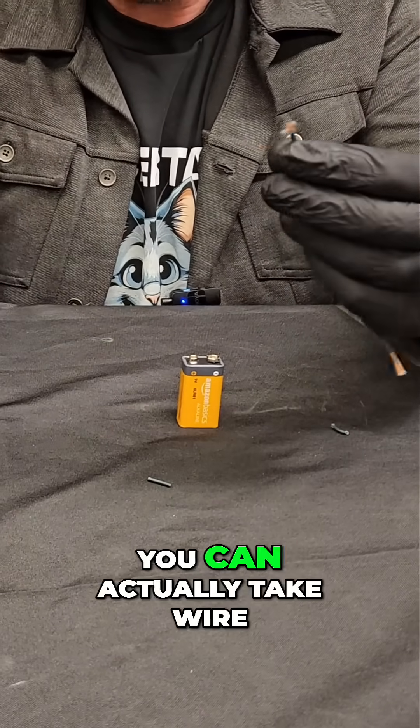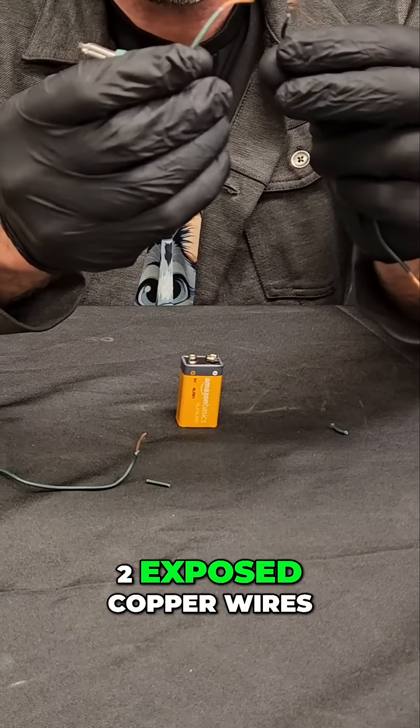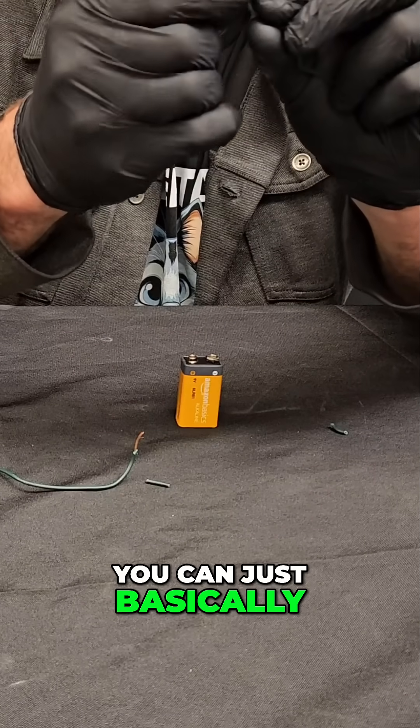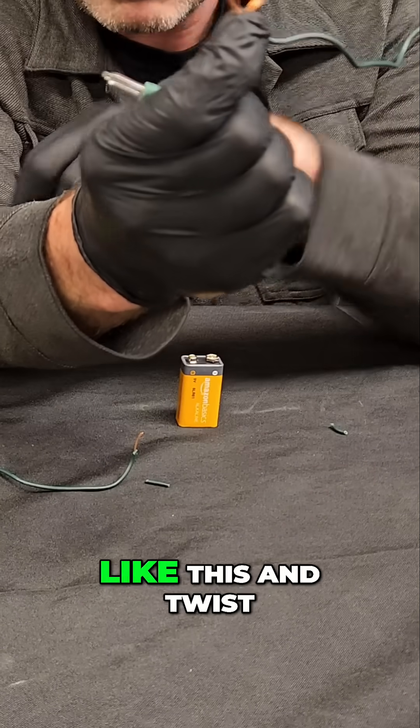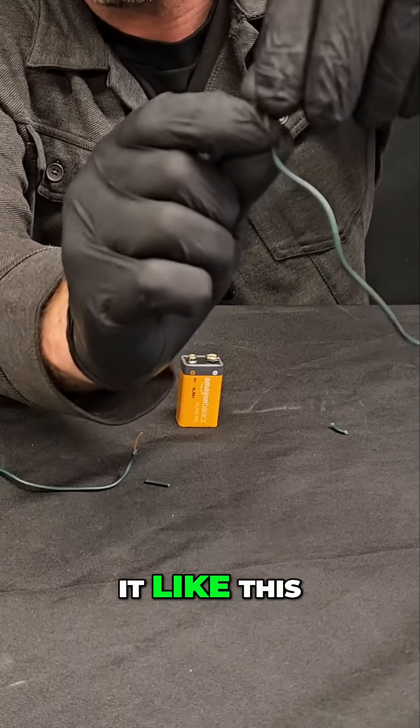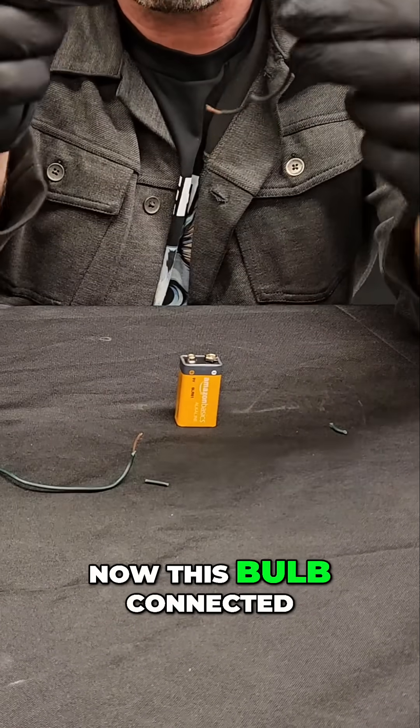If you have two exposed copper wires and you want to connect two elements together, you can hold up the copper like this and twist it around itself. If you twist it like this, you'll get this bulb connected to this wire.